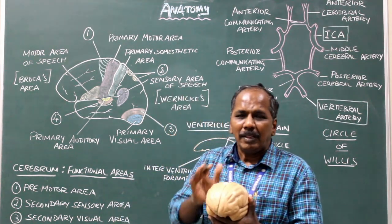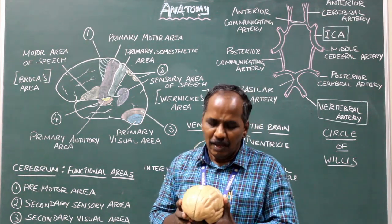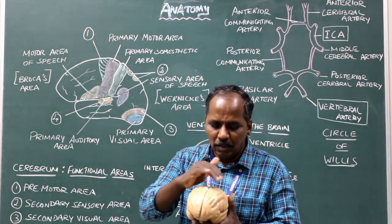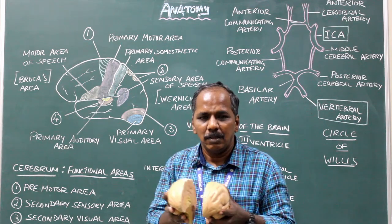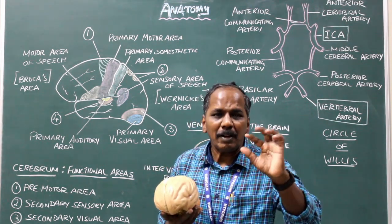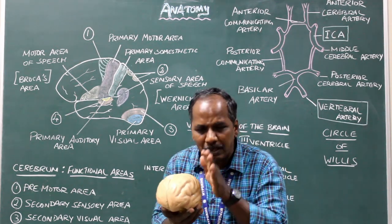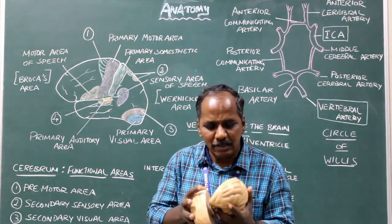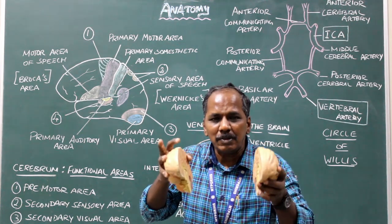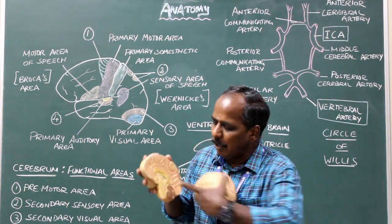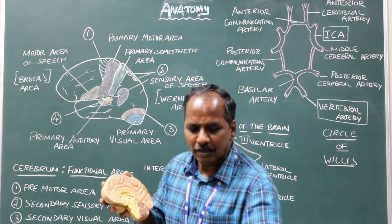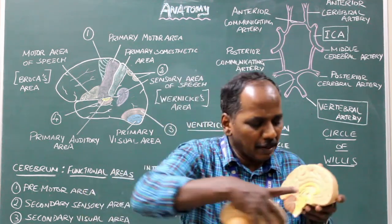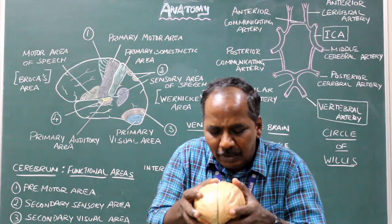Commissural fibers interconnect identical areas of the cerebral cortex present in two different hemispheres. Association fibers connect different regions in the same hemisphere, whereas commissural fibers connect identical areas present in the two cerebral hemispheres. An example is the corpus callosum.